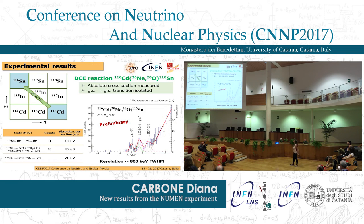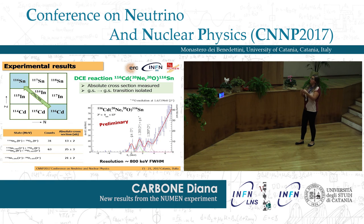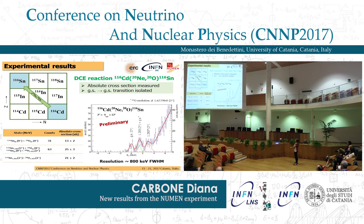These are the results for the double charge exchange reaction: the spectrum of tin-116. As you can see, the transition to the ground state is quite well separated with an energy resolution of 800 keV from the second peak, which corresponds to excitation of the first 2⁺ state of tin and the 2⁺ state of oxygen-20, and from a third structure corresponding to excitation of both target and projectile in their 2⁺ states. We obtained enough energy resolution to isolate the ground state transition. Integrating the cross section for the ground state, we obtain 13 ± 2 nanobarns — a very low cross section successfully measured.